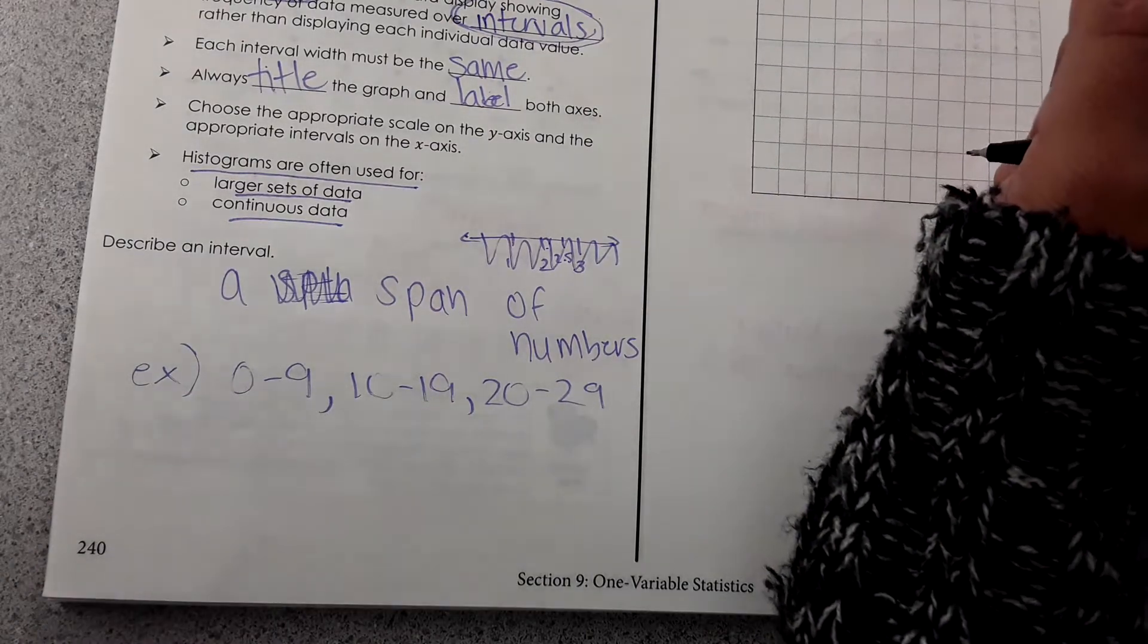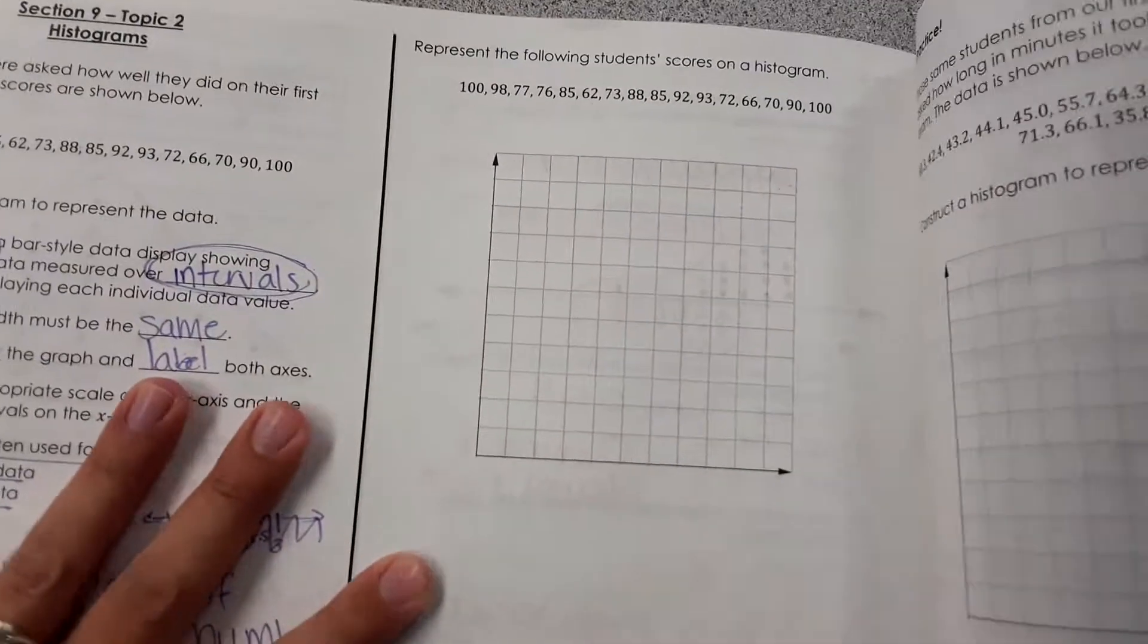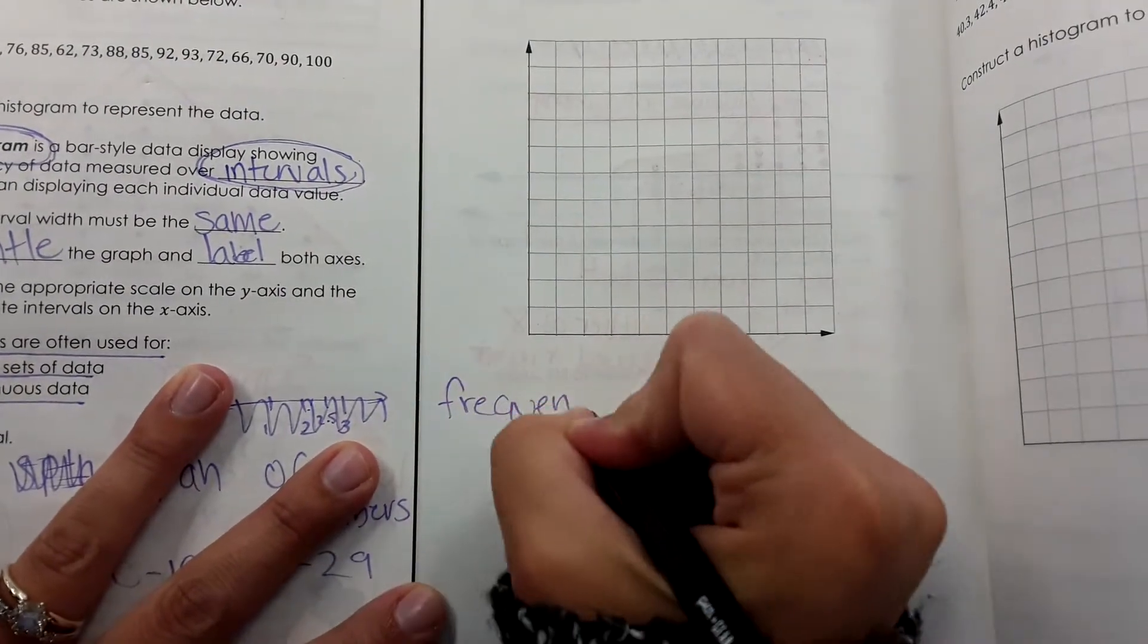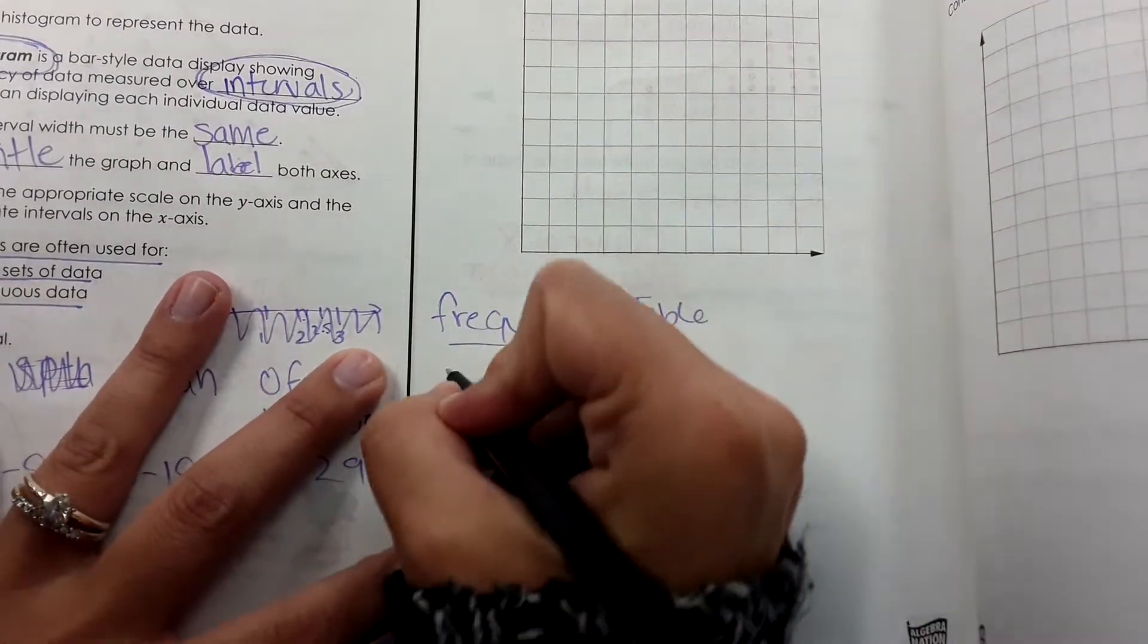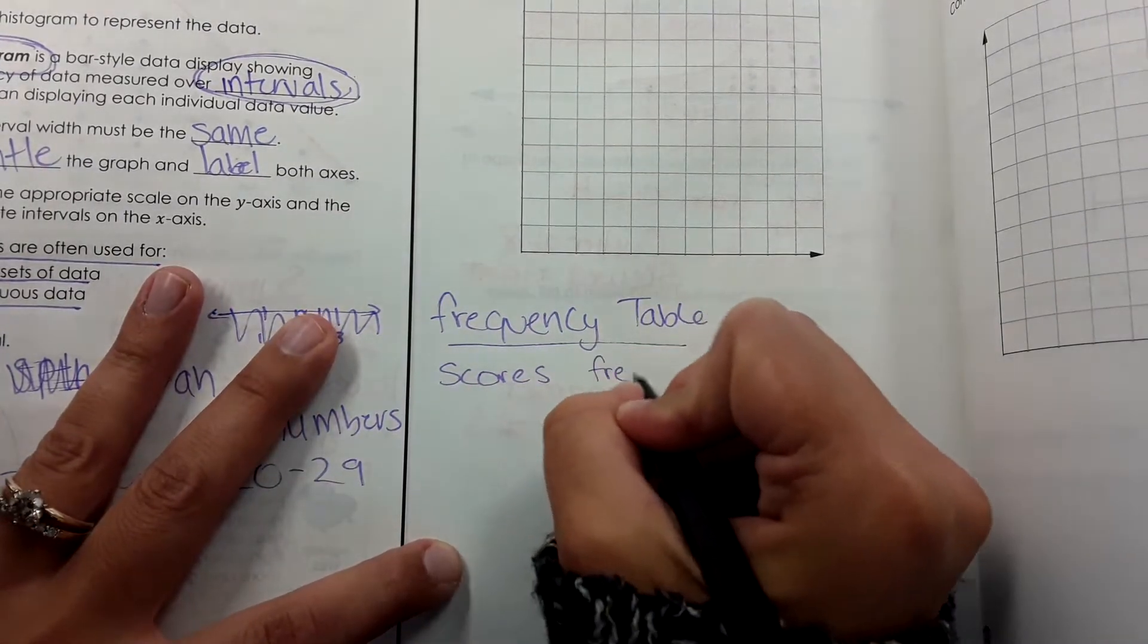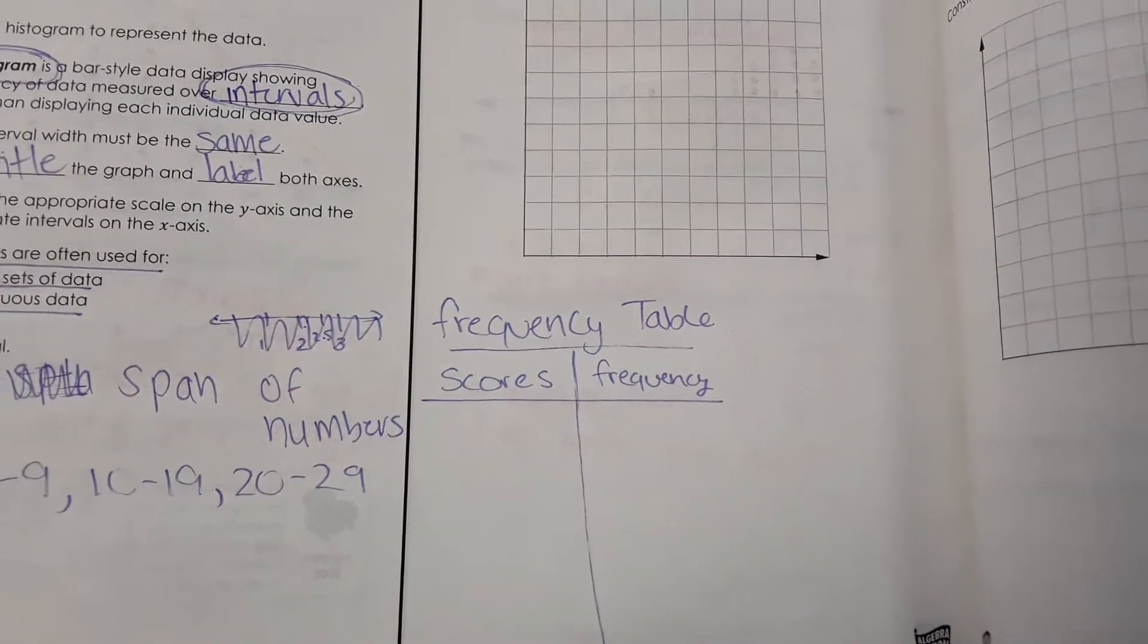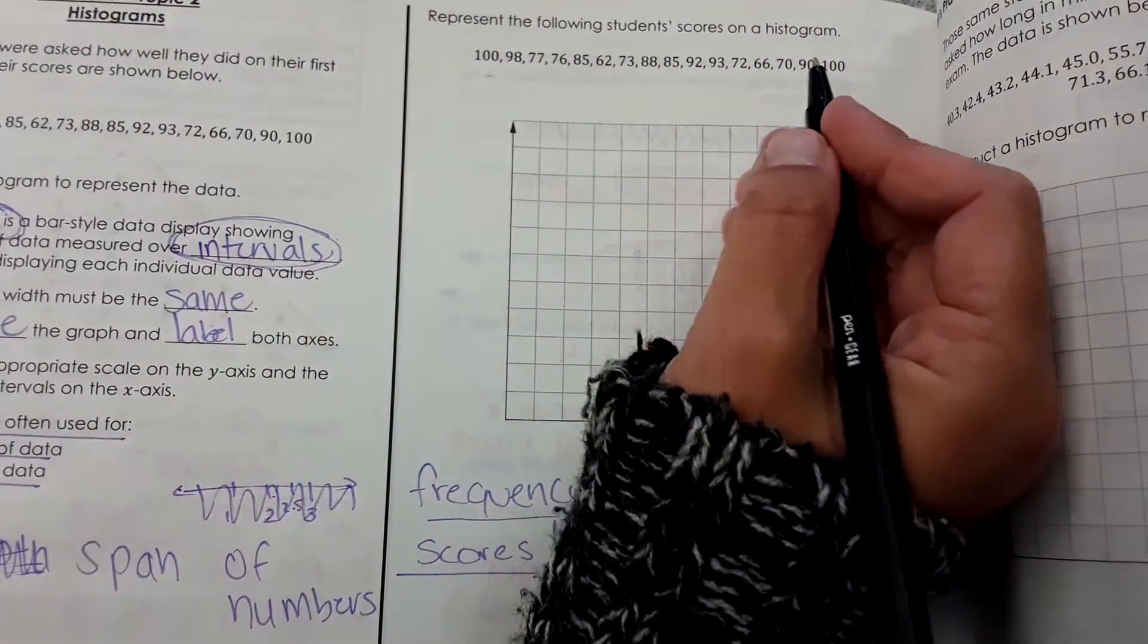Then over here we're going to set up a histogram with the numbers. Before we set up the graph though, we have to figure out what we have, and what we do for histograms is create a frequency table first. Frequency table. And for this, we'll have student test scores and the frequency. So this is going to be a tally chart, but instead of tallying each individual score, we're going to make intervals.